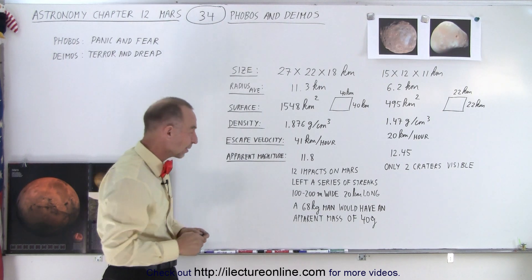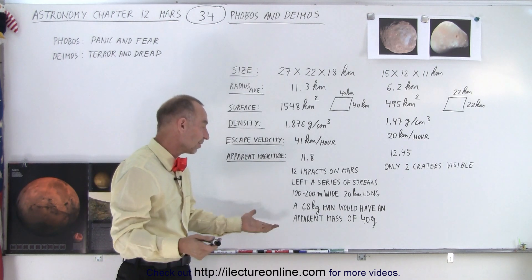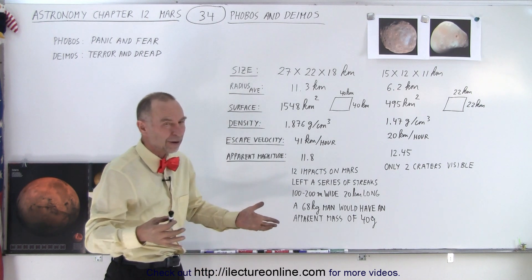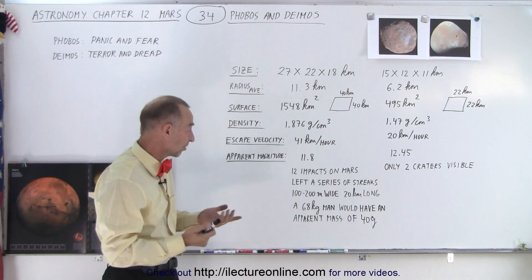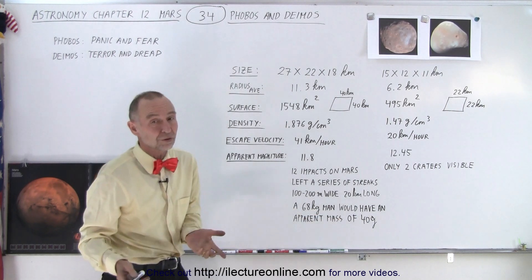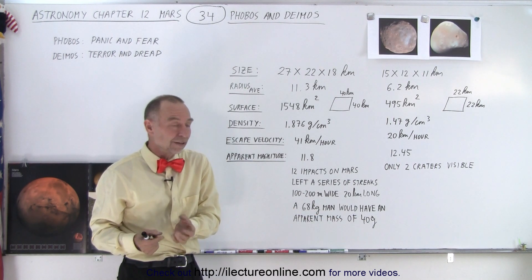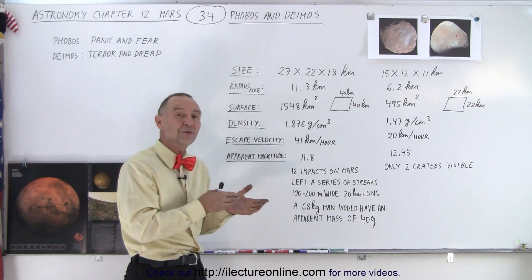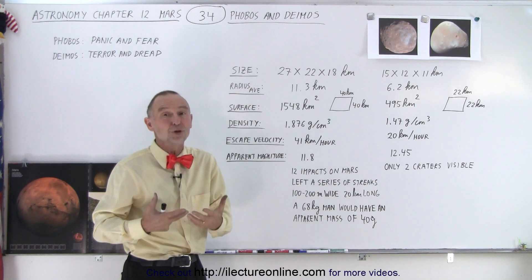Another interesting fact about Phobos is let's say you're a typical sized person at 68 kilograms—maybe a little bit less than typical—you would have an apparent mass of 40 grams. In other words, a typical person if you were to stand on the surface of Phobos would only have a weight of about two ounces.